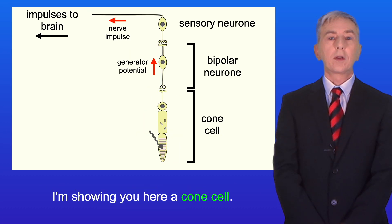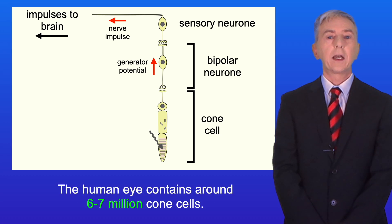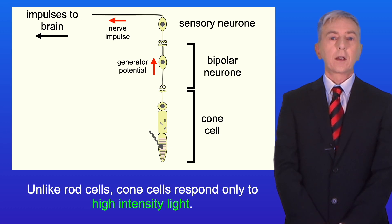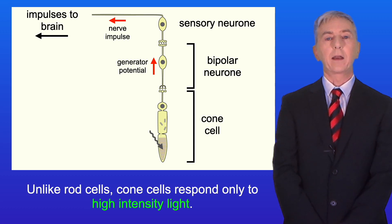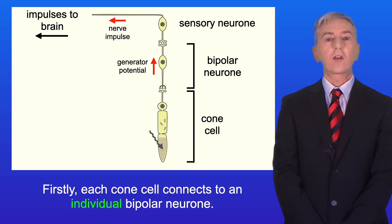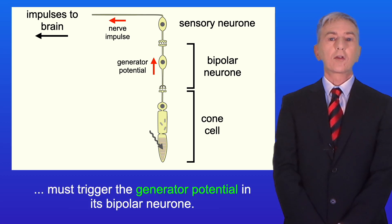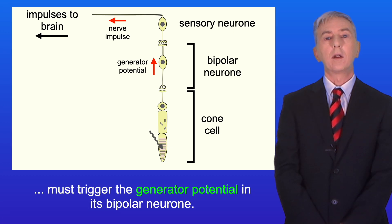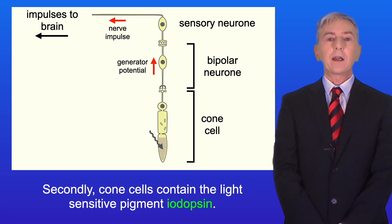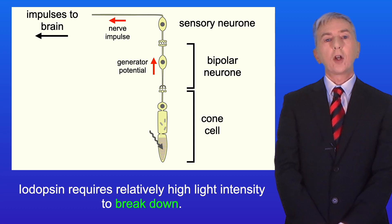Here is a cone cell, and the human eye contains around six to seven million cone cells. Unlike rod cells, cone cells respond only to high intensity light, and there are two reasons for this. Firstly, each cone cell connects to an individual bipolar neuron, meaning each cone cell must trigger the generator potential in its own bipolar neuron and there is no summation between different cone cells. Secondly, cone cells contain the light-sensitive pigment iodopsin, and iodopsin requires relatively high light intensity to break down.